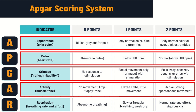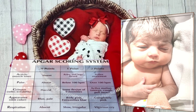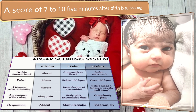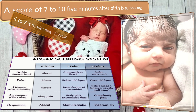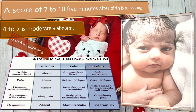This is the complete APGAR scoring system chart. A is for appearance or skin color, P is for pulse or heart rate, G is for grimace or reflex irritability, A is for activity or muscle tone, and R is for respiration — breathing rate and effort. A score of 7 to 10 at 5 minutes after birth is reassuring. A score of 4 to 7 is moderately abnormal, and 0 to 3 is concerning.